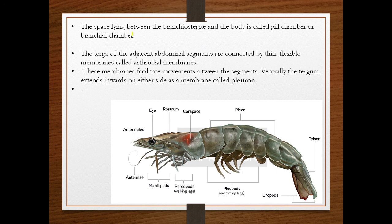The space lying between the branchiostegite and the body is called the gill chamber or branchial chamber. The carapace forms the gill cover, and the entire enclosed space is called the gill chamber, which houses the gills.